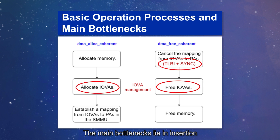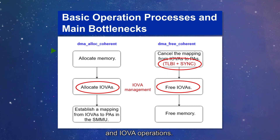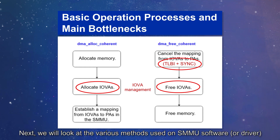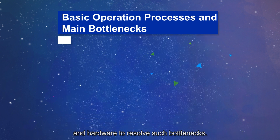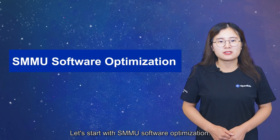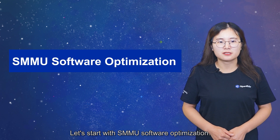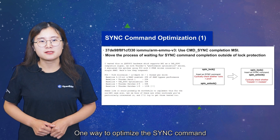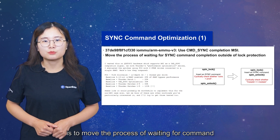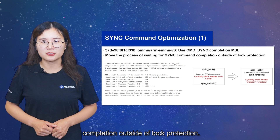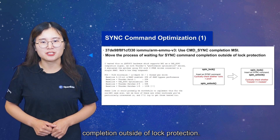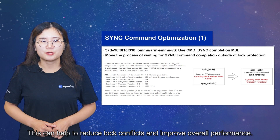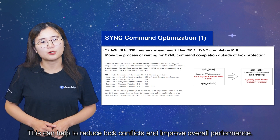The main bottlenecks lie in insertion and execution of TLBI plus sync commands, and IOVA operations. We will look at the various methods used in SMMU software or driver and hardware to resolve such bottlenecks. Let's start with SMMU software optimization. One way to optimize the sync command is to move the process of waiting for command completion outside of lock protection. This can help to reduce lock conflicts and improve overall performance.